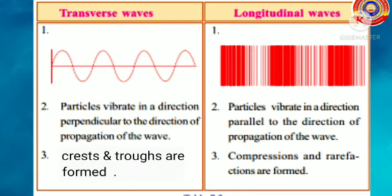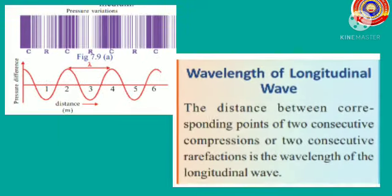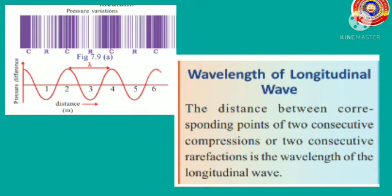The differences between transverse waves and longitudinal waves are: transverse waves vibrate in a direction perpendicular to the direction of propagation, while longitudinal waves vibrate parallel to it. In transverse waves, crests and troughs are formed, but in longitudinal waves, compressions and rarefactions are formed. The distance between corresponding points of two consecutive compressions or two consecutive rarefactions is the wavelength of the longitudinal wave.